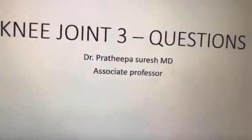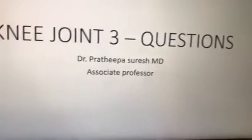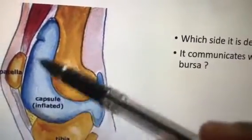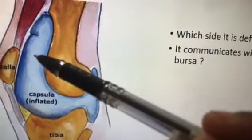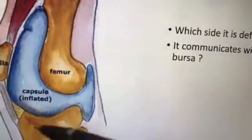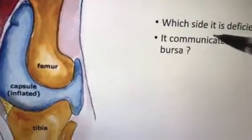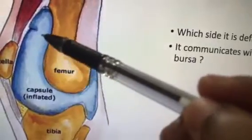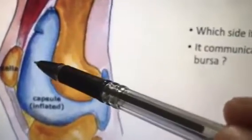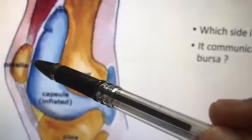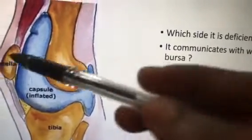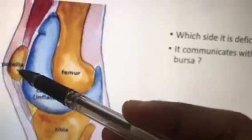Hi students, this is Part 3 of the knee joint video. We'll ask some questions — try yourself first. The capsule covers the anterior, posterior, and both sides. Anteriorly it is supported by the quadriceps muscle, posteriorly by the oblique popliteal ligament, and on both sides by the lateral retinacula. The capsule is deficient on the anterosuperior side, below the quadriceps, and communicates with the suprapatellar bursa, which is the bursa present above the patella.